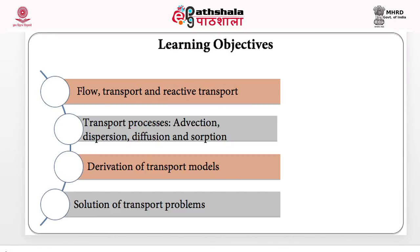Let us start with the learning objectives of the module. We will start with learning the different types of problems: storage problems, transfer problems, and reactive transfer problems. We will learn to distinguish between these types. Then we will learn about different types of transfer processes: advection, dispersion, diffusion, and chemical processes such as sorption. Eventually we will learn to set up a problem, derive a reactive transfer model, solve the problem, and visualize the solution.